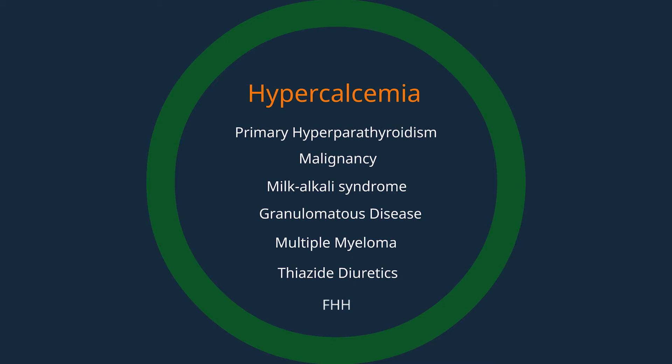In primary hyperparathyroidism, there's often asymptomatic hypercalcemia accompanied by low phosphorus and high PTH. This is the most common cause of hypercalcemia. Malignancy is the second most common and is often evident by history and physical examination.